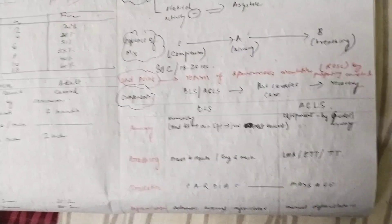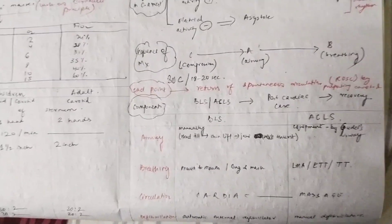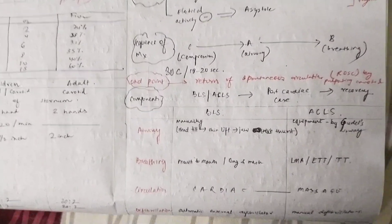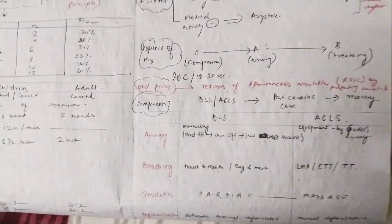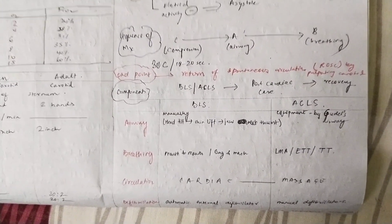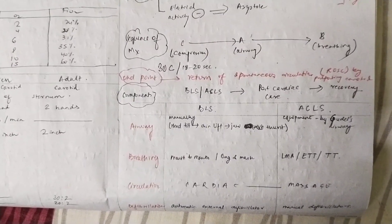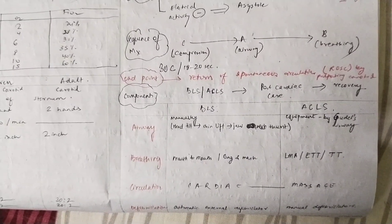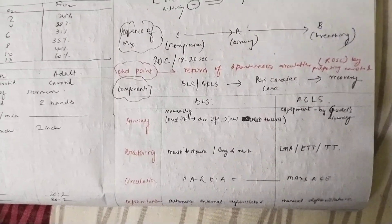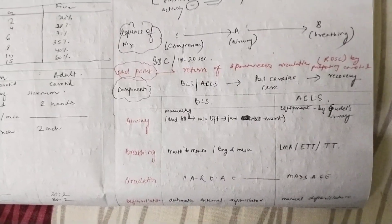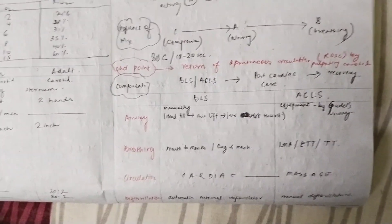The components of BLS and ACLS are the same as parts of CPCR: airway, breathing, circulation, drugs, and exposure. There are differences between the two. For airway: in BLS, airway management is done manually — head tilt, chin lift, and jaw thrust — because anyone can do it anywhere. But in ACLS, this is done using equipment called a dual airway.